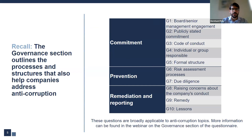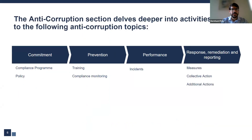Questions in the Governance section refer to processes and structures that also help companies address anti-corruption topics. You can see the various elements from the Governance section that are also applicable to the Anti-Corruption section, such as a company code of conduct and processes to assess risk. Similar to the previous sections of the questionnaire, the Anti-Corruption section has questions that address topics such as commitment, prevention, performance, and remediation response and reporting.